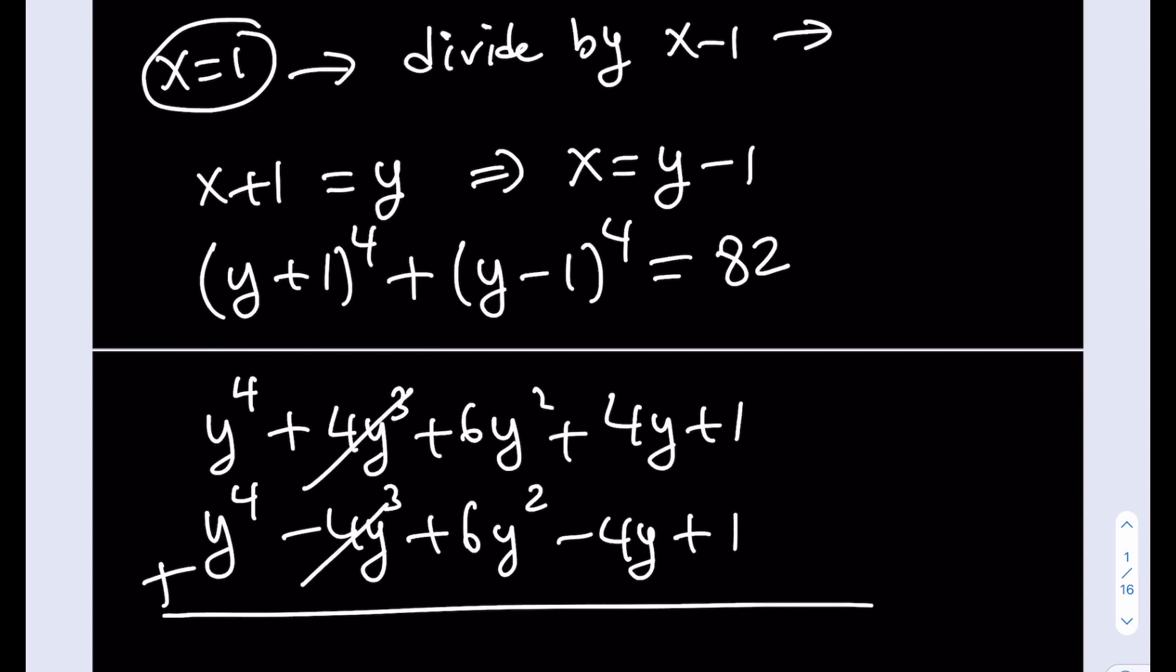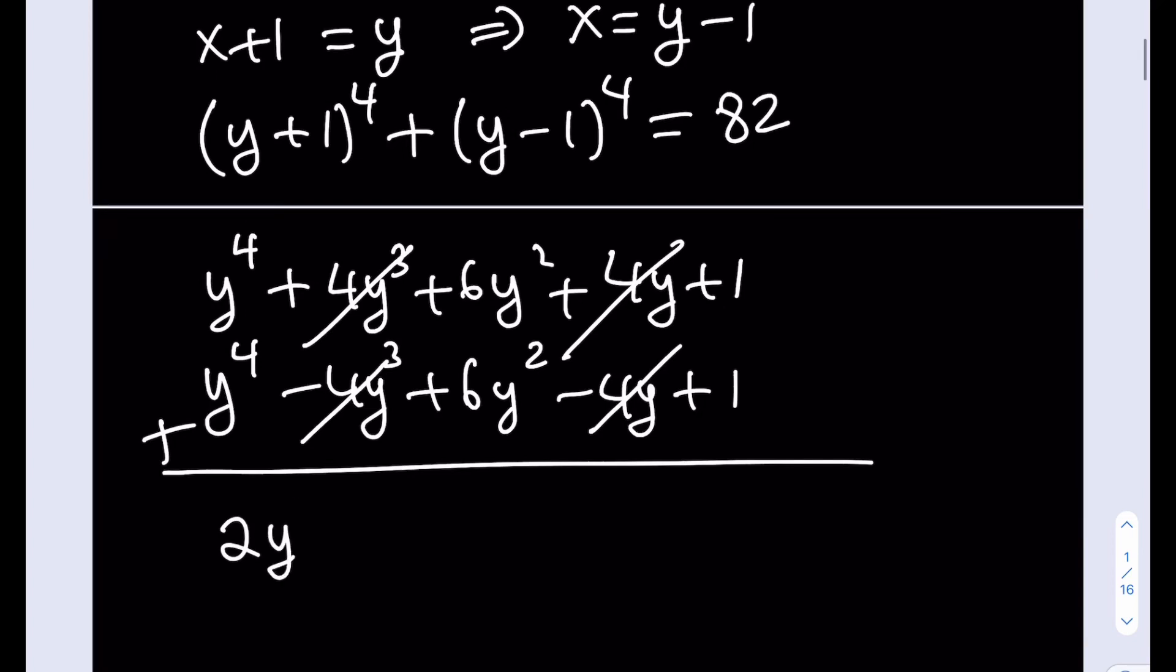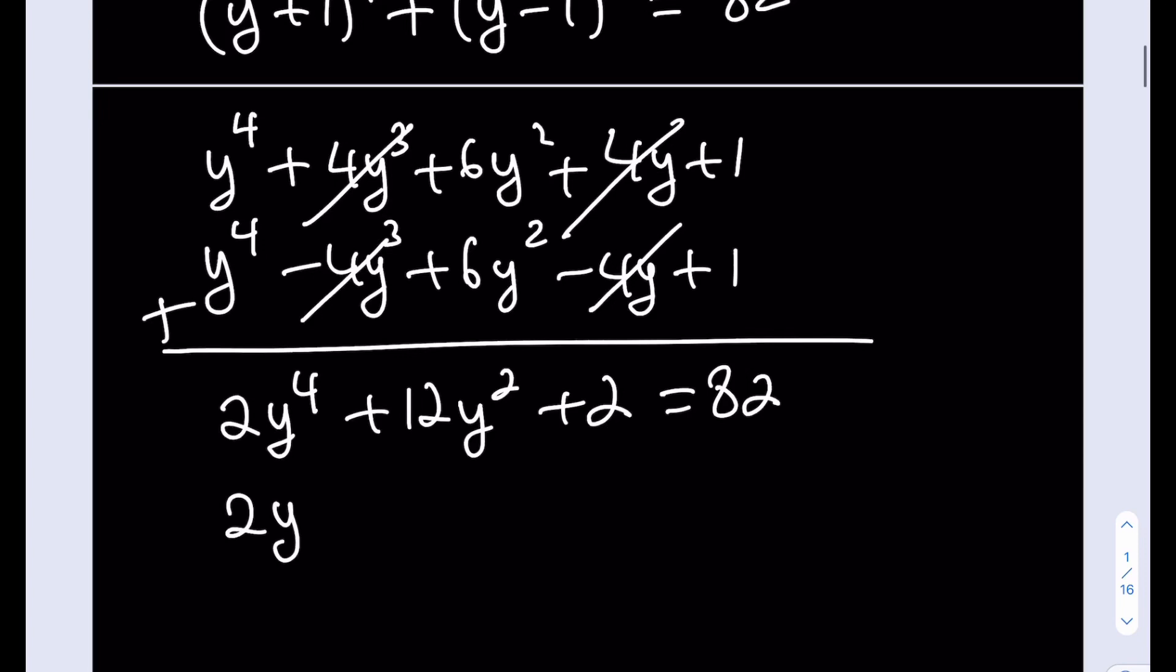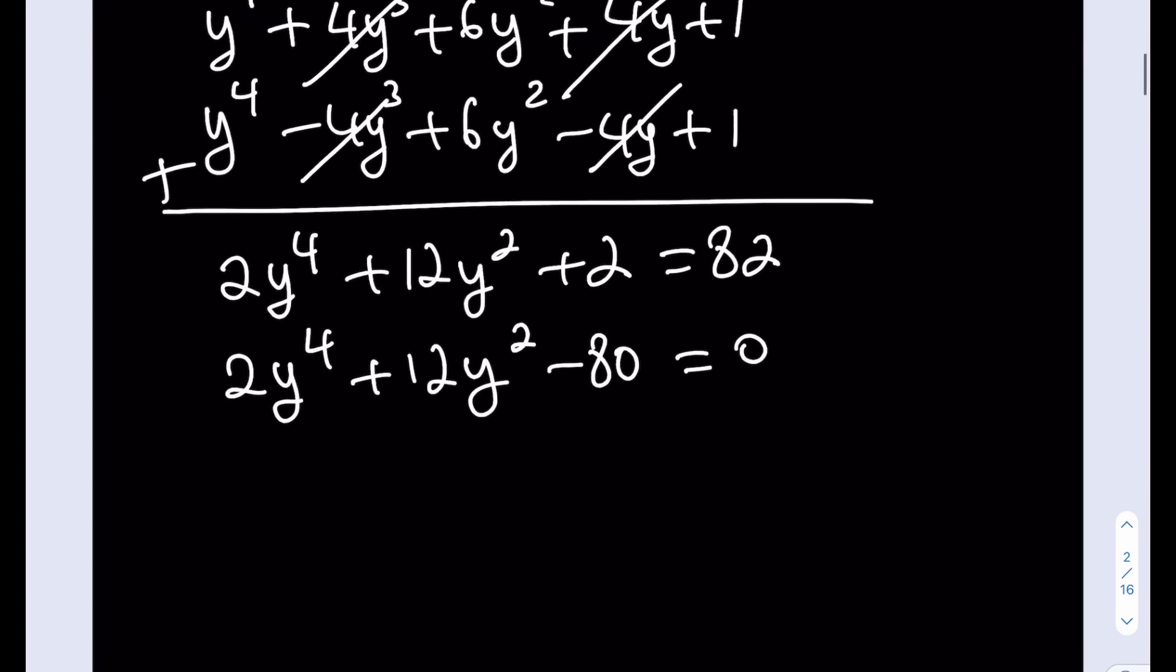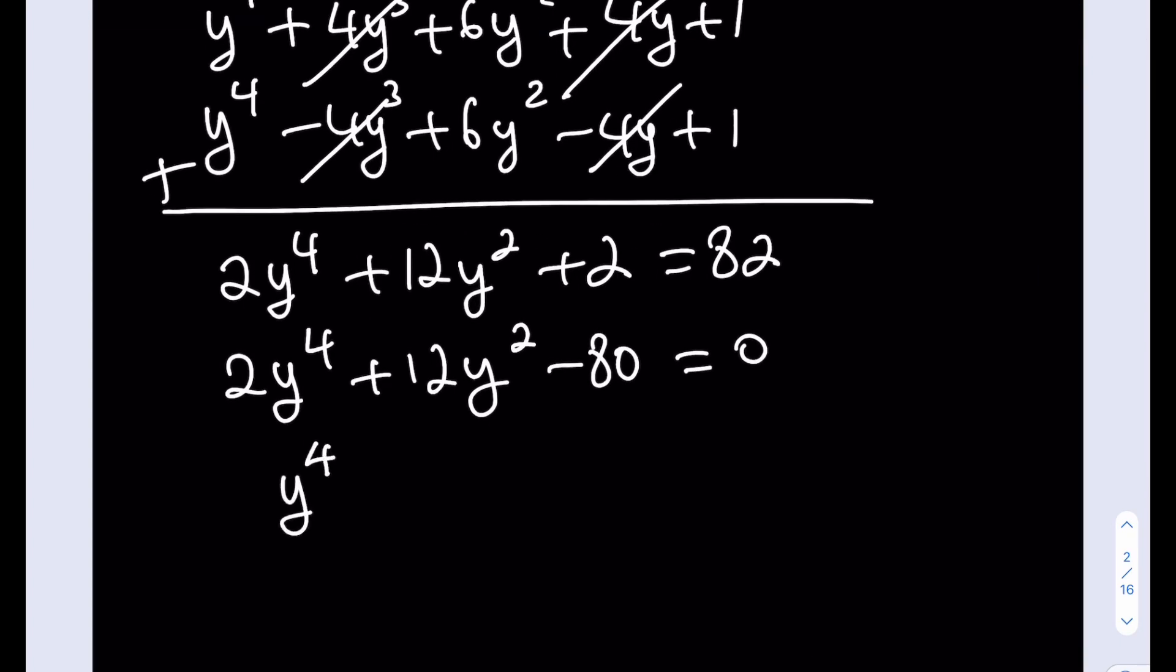And we end up with 2y to the fourth plus 12y squared plus 2, and the whole thing is equal to 82. Beautiful. Let's go ahead and subtract 82. This is going to give us 2y to the fourth plus 12y squared minus 80 is equal to 0. Beautiful. Let's go ahead and divide everything by 2: y to the fourth plus 6y squared minus 40 is equal to 0.